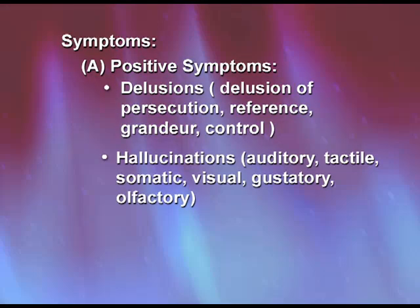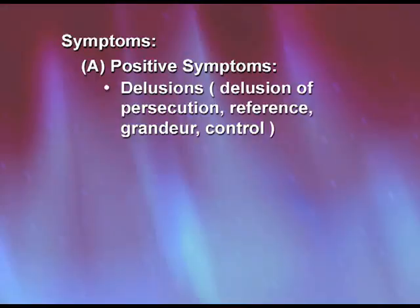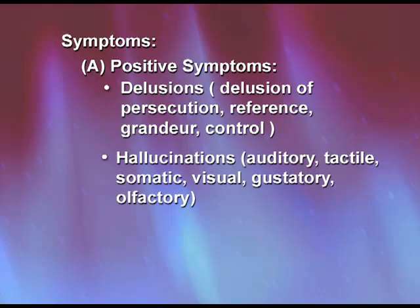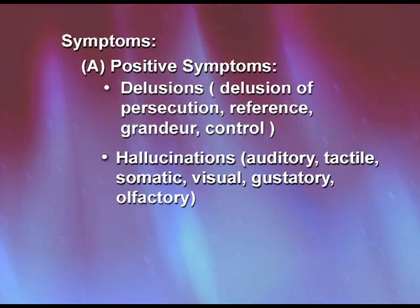Other types of hallucination include tactile hallucination — feeling burning or tingling sensations in the body with no physical cause. Somatic hallucination is when a person feels something like a snake crawling in the stomach, dealing with the body. Visual hallucination involves seeing colors and images that do not exist. Gustatory hallucination involves taste — for example, believing a cake has poison in it. Olfactory hallucination is the last type, involving smell — the person smells something unhealthy that nobody else can smell.